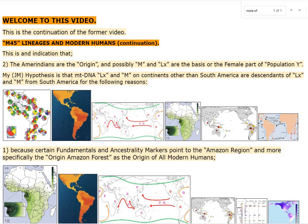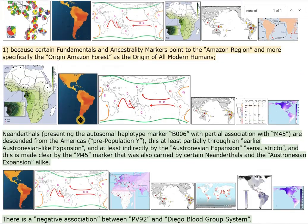M45 lineages and modern humans continuation. This is an indication that the Amerindians are the origin, and possibly M and LX are the basis or the female part of population Y. My hypothesis is that mtDNA LX and M on continents other than South America are descendants of LX and M from South America, because certain fundamentals and ancestrality markers point to the Amazon region, and more specifically the origin Amazon forest, as the origin of all modern humans.